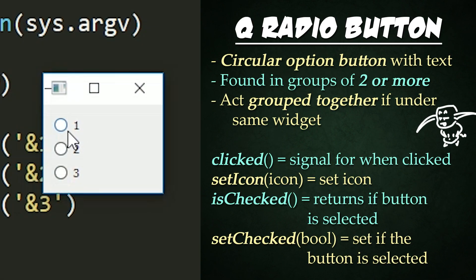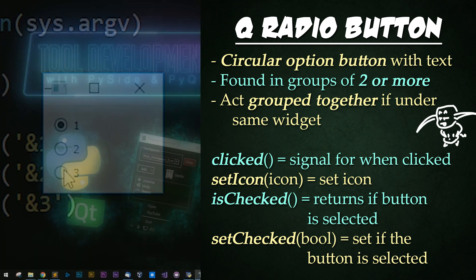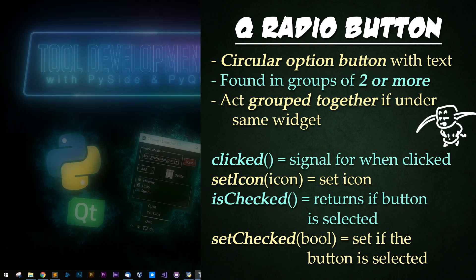A radio button is a circular option button with a text label. Radio buttons usually appear grouped together in quantities of two or more. It is used when the user must select one of many options, similar to a combo box. The difference is that radio buttons are typically used when the option text is longer than two words.